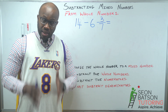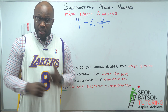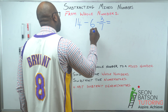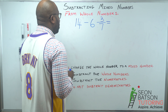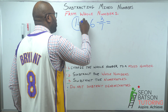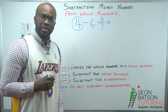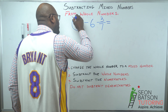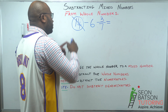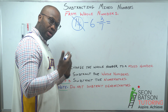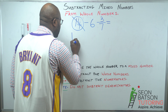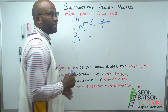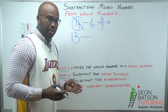First example: 14 take 6 and three over seven. Step one — we will change our whole number, which is 14, to a mixed number. To do that, we first borrow one from the 14. If we borrow one from 14, 13 is left.